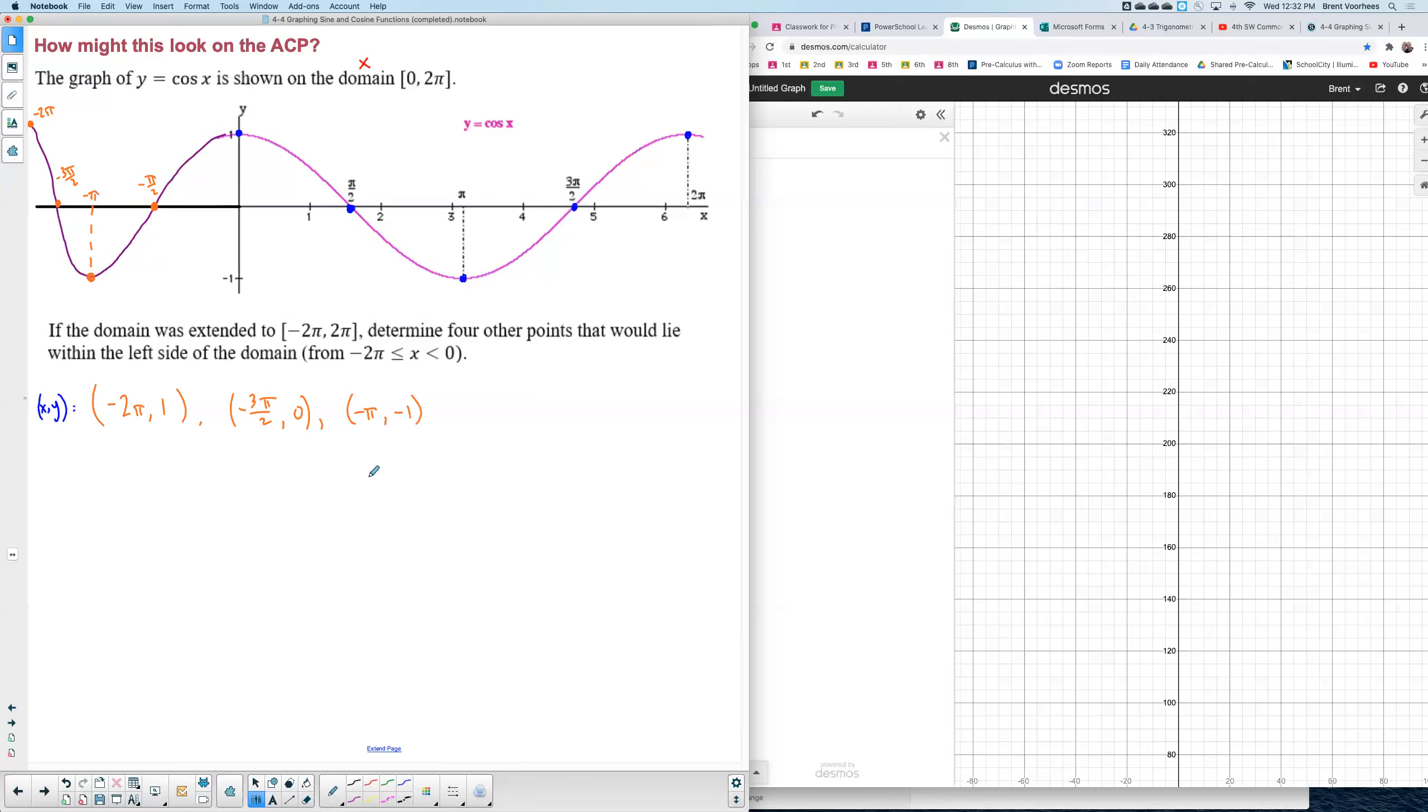And now my fourth and final would be located at negative pi over two with a height of zero. Granted you could find other points. You could use any of these points listed here.